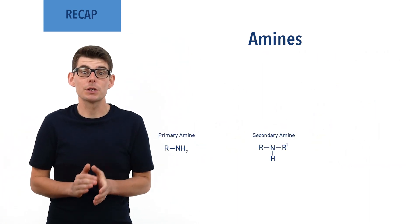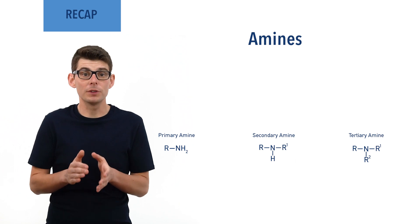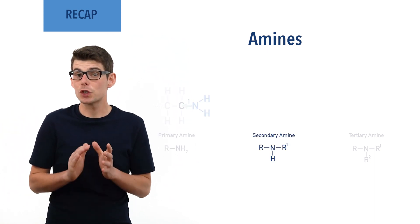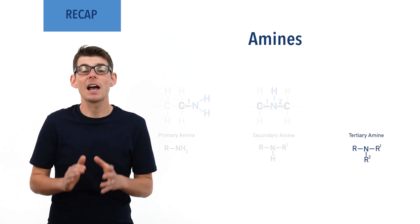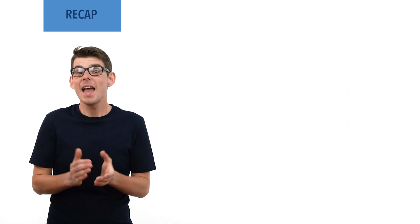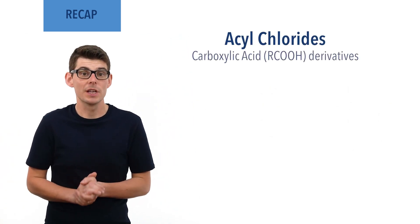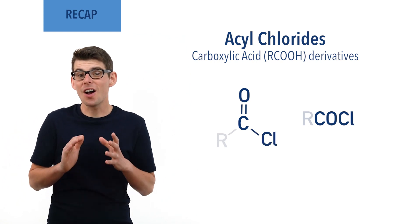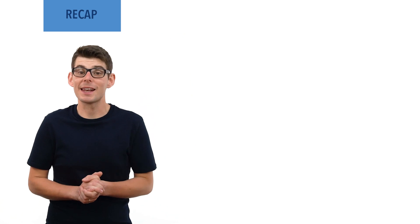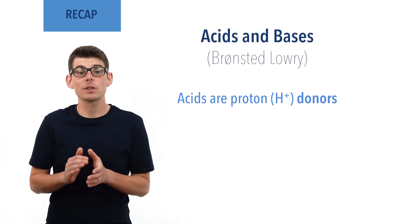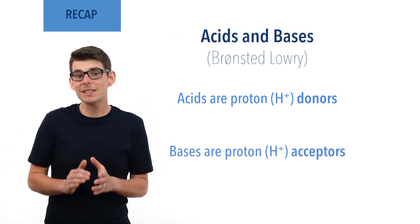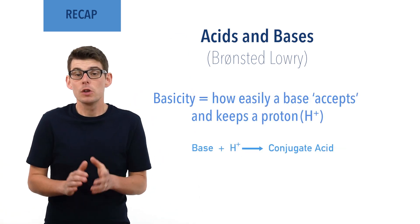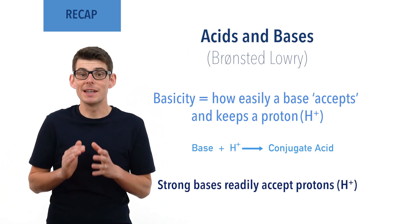Amines can be primary, secondary, or tertiary, depending on the number of carbon groups bonded to the nitrogen. Primary amines have one carbon group bonded to the nitrogen, secondary amines have two, and tertiary amines have three. Acyl chlorides are derivatives of carboxylic acids and have a functional group with a carbon atom double bonded to an oxygen atom and single bonded to a chlorine atom. They are highly reactive.